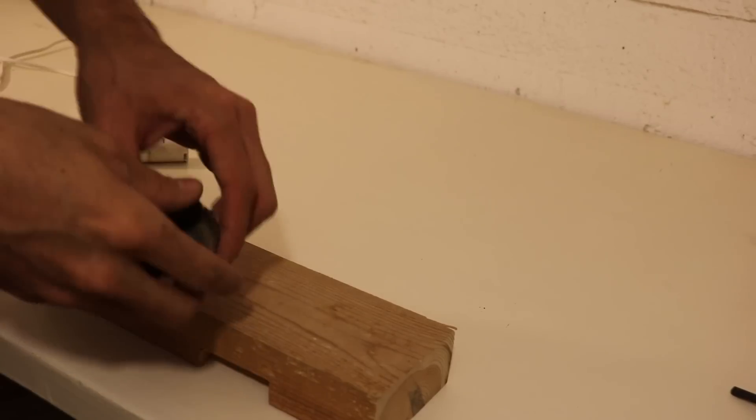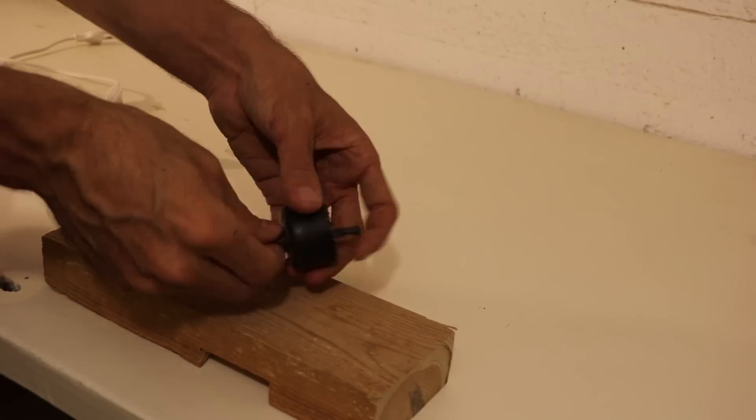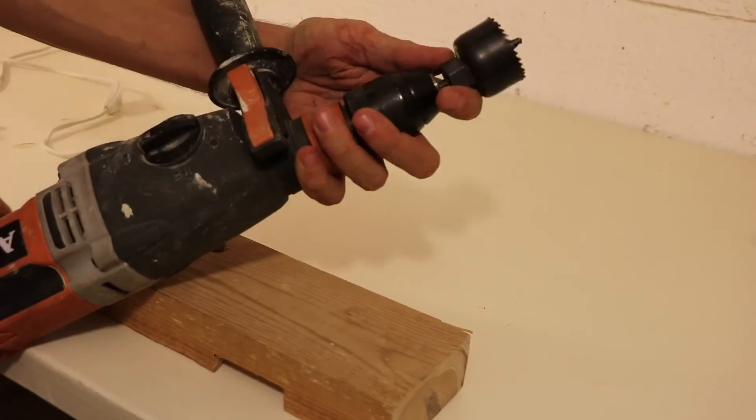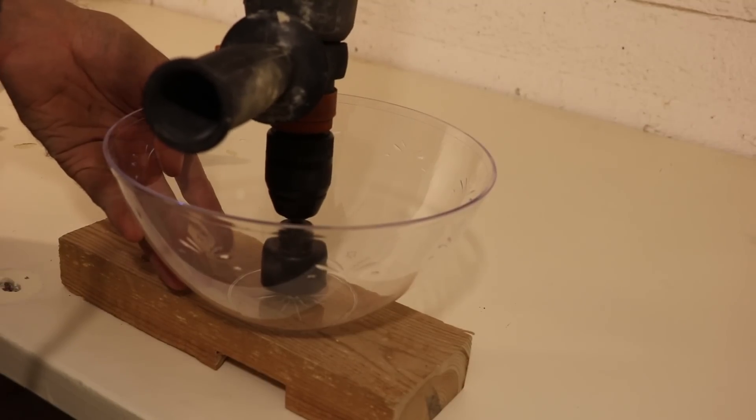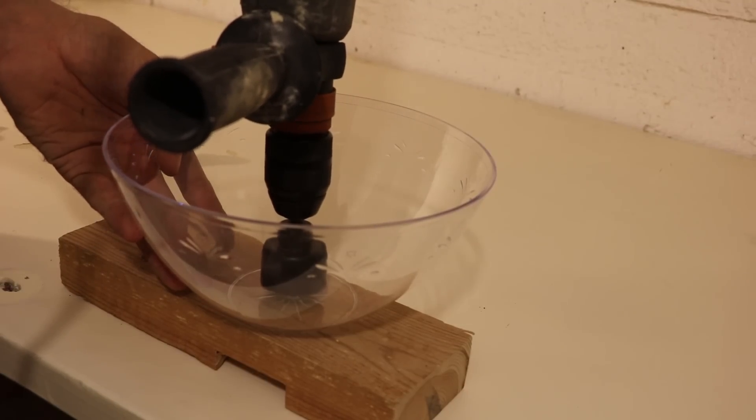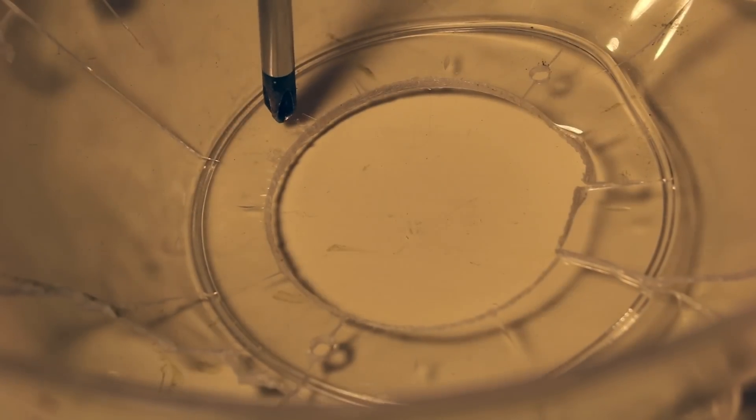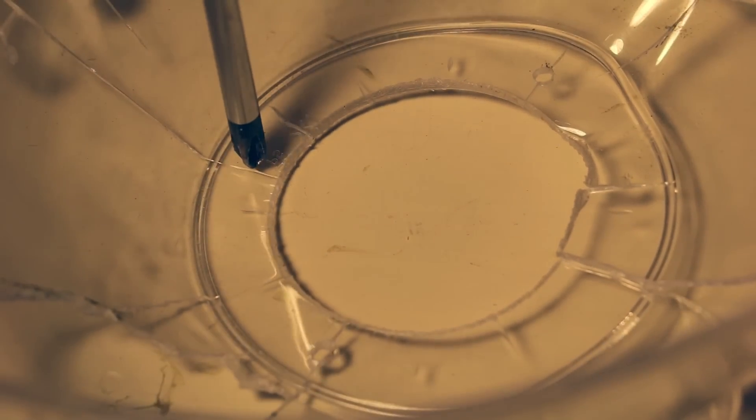I started by drilling a hole for the light bulb in the bottom of the bowl. But as soon as I started drilling, I could hear the bowl cracking. Just see on this bowl I used for testing how brittle the material is.